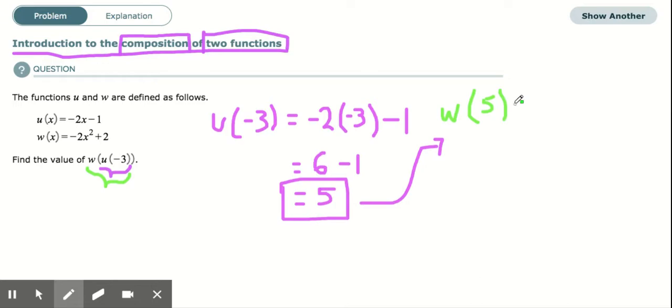When we evaluate our w function, we're plugging in 5 for x. So that'll be negative 2 times x, or 5 in this case, squared, plus 2.